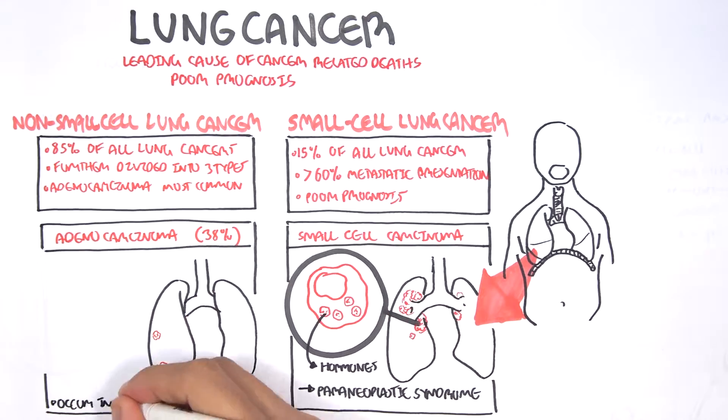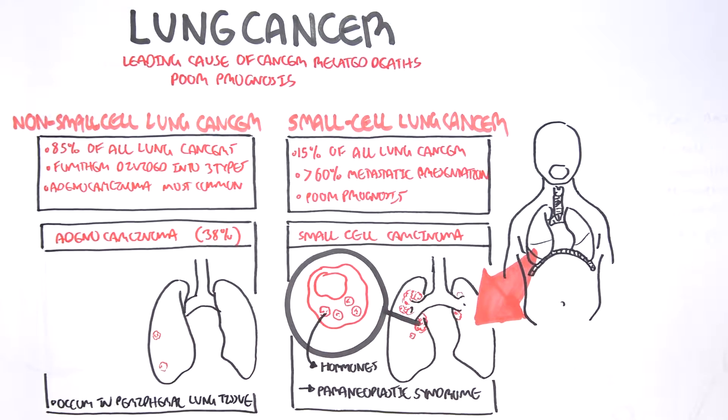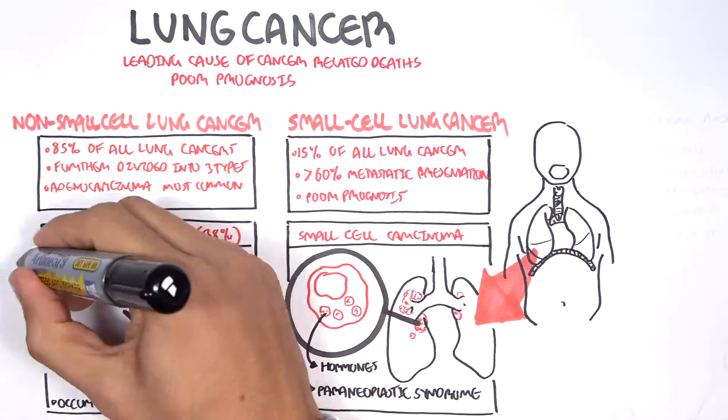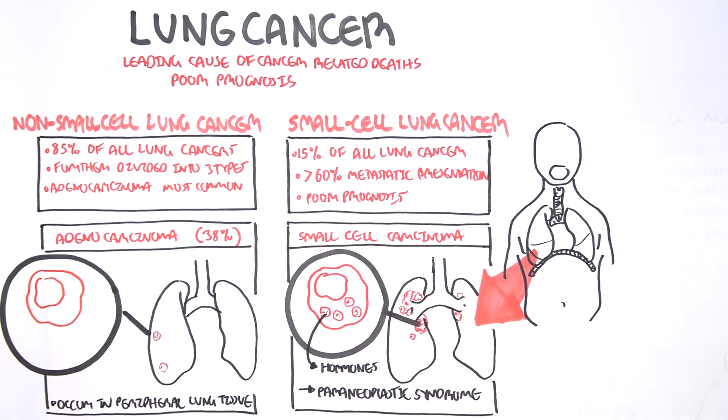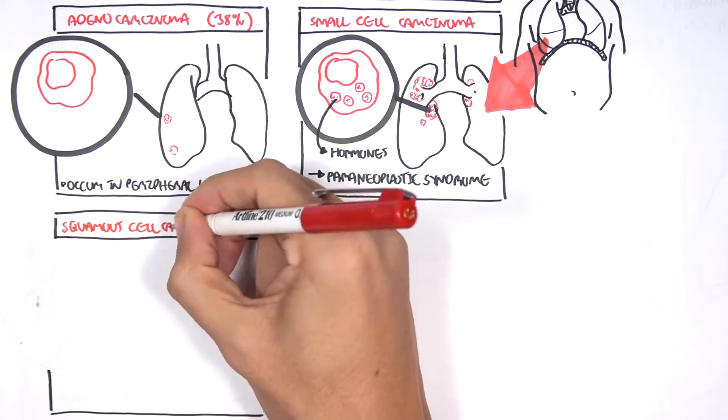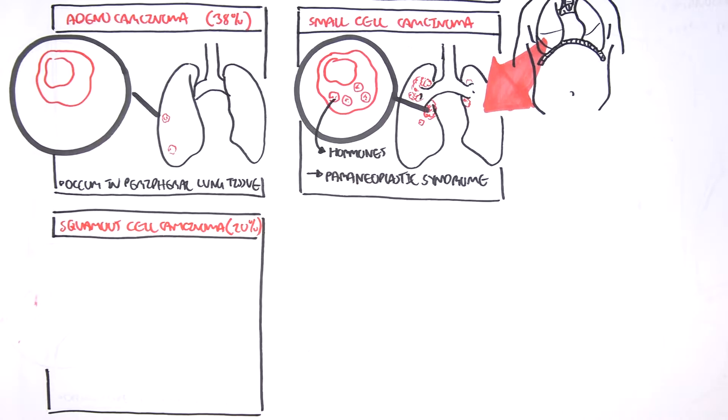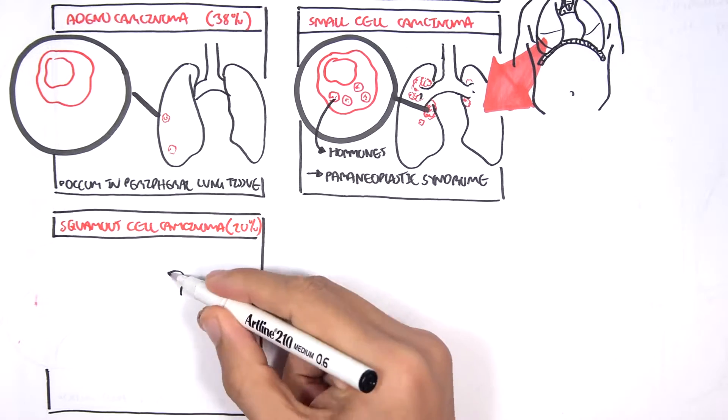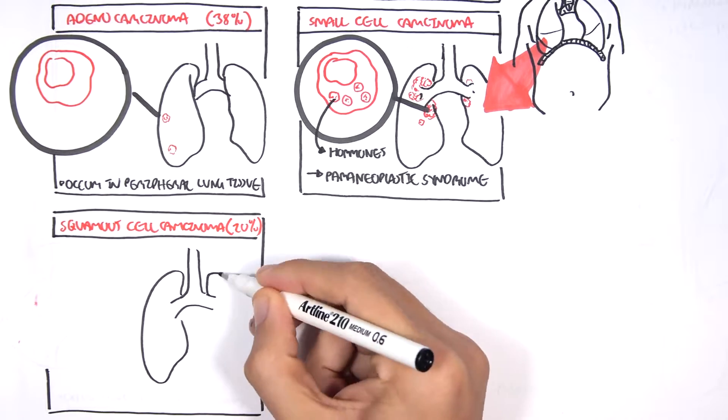These types of cancers tend to occur in the peripheral lung tissue, so away from the hilum, and involves glands within the lung. Squamous cell carcinoma is the other type of non-small cell carcinoma and makes up about 20% of lung carcinoma cases, making it the second most prevalent type of lung carcinoma.